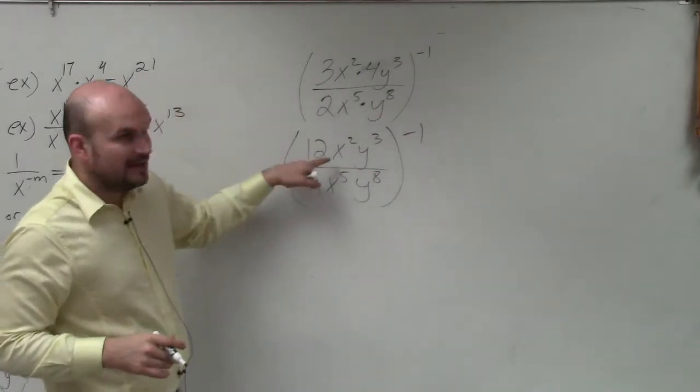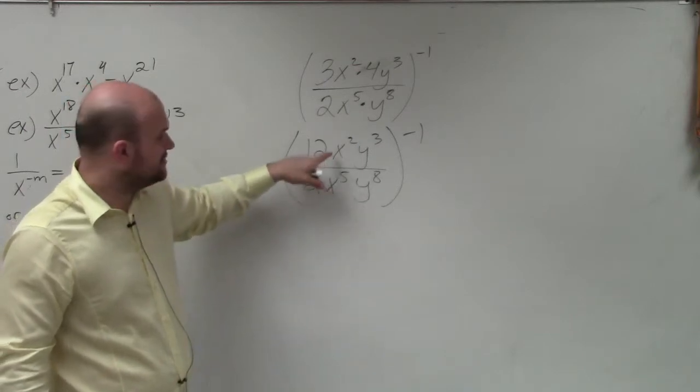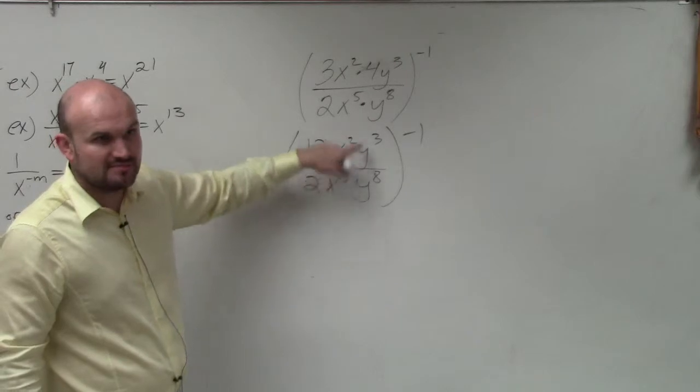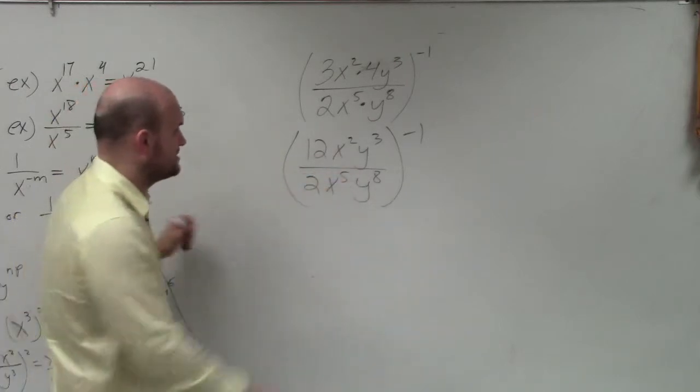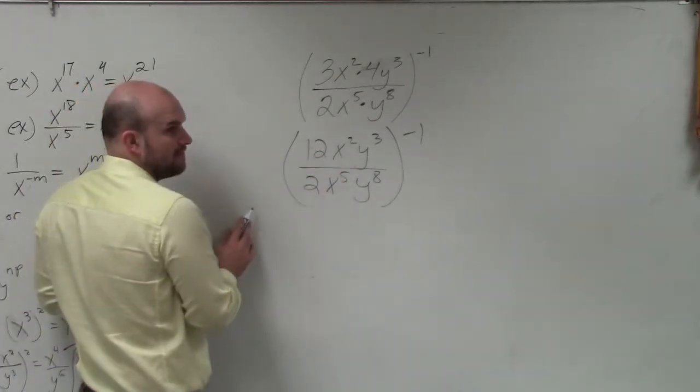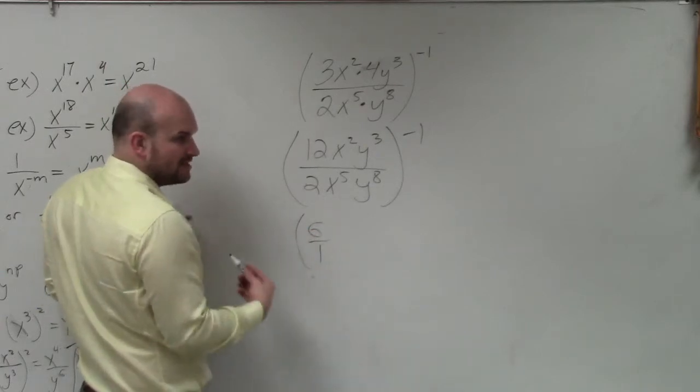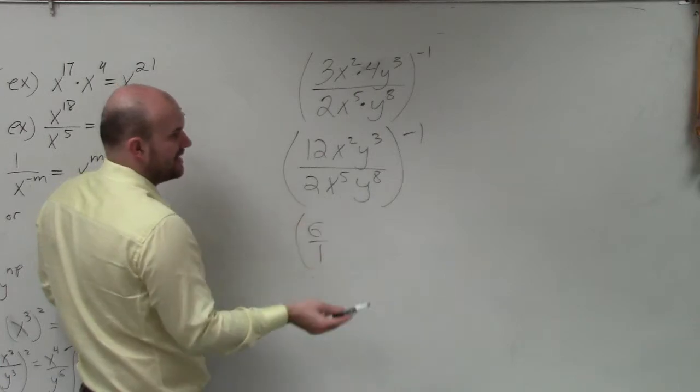Now, again, I can simplify inside of here by using my quotient rule. I can subtract my powers because I'm dividing these exponents with the same base. Does 2 divide into 12? How many times? 6. I'm going to leave it as a fraction, as 6 over 1, so I remember that the 6 is in the numerator, not the denominator.